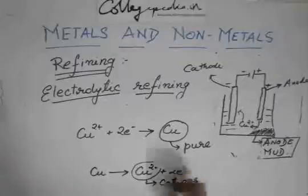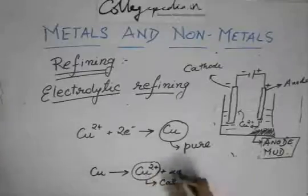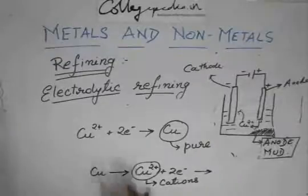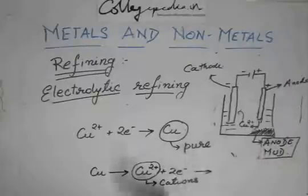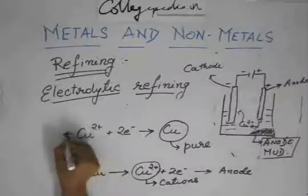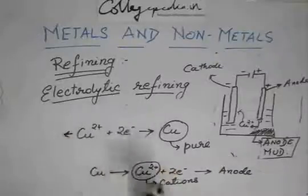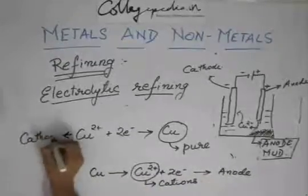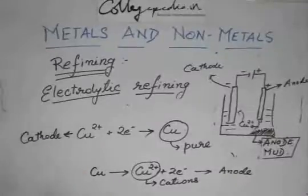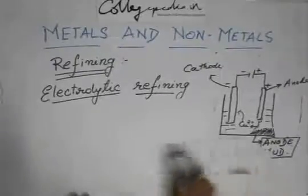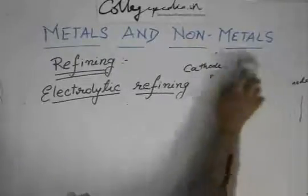This is the method of electrolytic refining. They will ask you where these reactions take place and to write the reactions. At the anode, electrons are getting released — so it becomes positively charged. At the cathode, electrons are being taken, so the cathode supplies them. That deposition reaction takes place at the cathode.